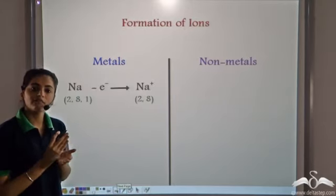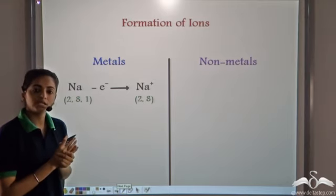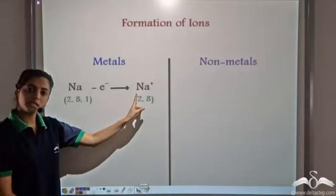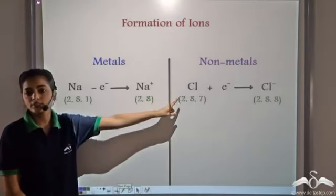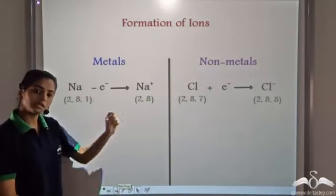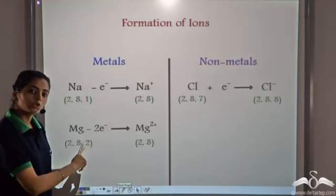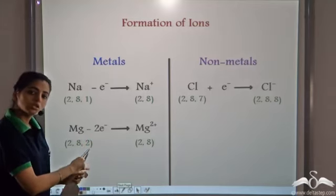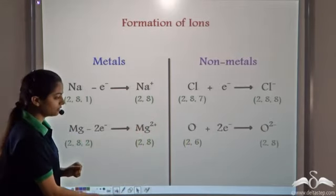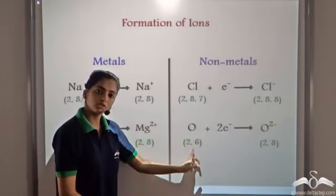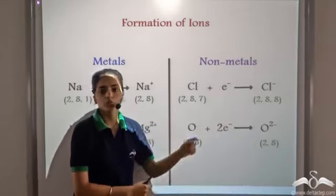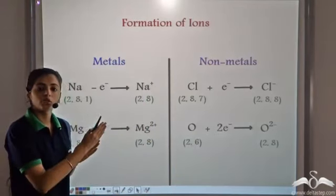Metals, since they have 1, 2, or 3 valence electrons, can easily lose these electrons to become stable. Sodium can lose 1 electron to become Na⁺. In the case of non-metals, chlorine gains 1 electron to become stable and satisfy the octet rule. Similarly, magnesium can lose 2 electrons since the outermost shell has 2 electrons, losing them to become Mg²⁺. And when we have oxygen — electronic configuration 2, 6 — it gains 2 electrons to become O²⁻. So metals lose electrons and non-metals gain electrons.